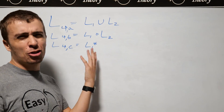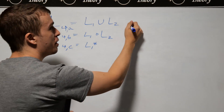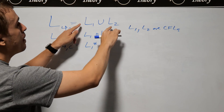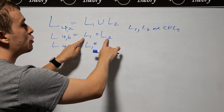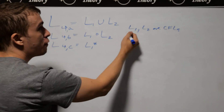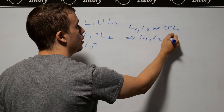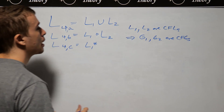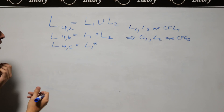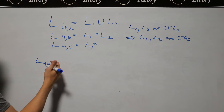Let's make context-free grammars corresponding to two context-free languages L1 and L2 — specifically for their union, concatenation, and the star of L1. Since they're context-free languages, we have two grammars G1 and G2. Let's talk about the union first, since it generalizes. If we have the union of two context-free languages, then either G1 can make the string we're after, or G2 can make the string we're after.